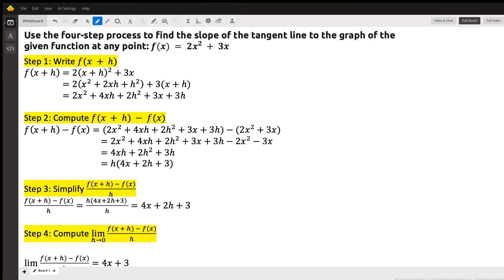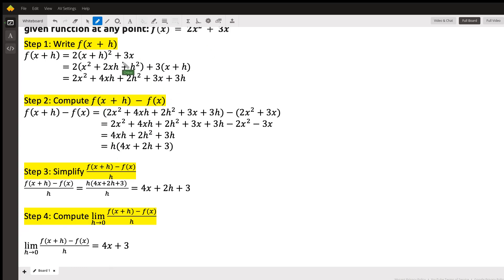Hello, we're going to use the four-step process to find the slope of the tangent line to the graph of the given function at any point. Our given function is f(x) = 2x² + 3x. So the four-step process, I've highlighted the steps here.